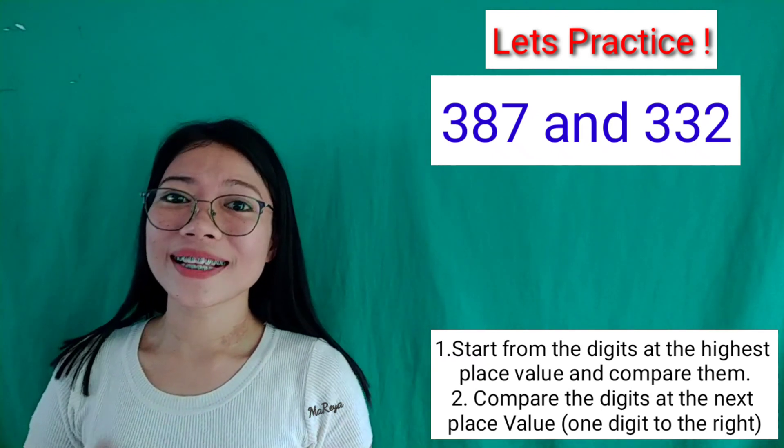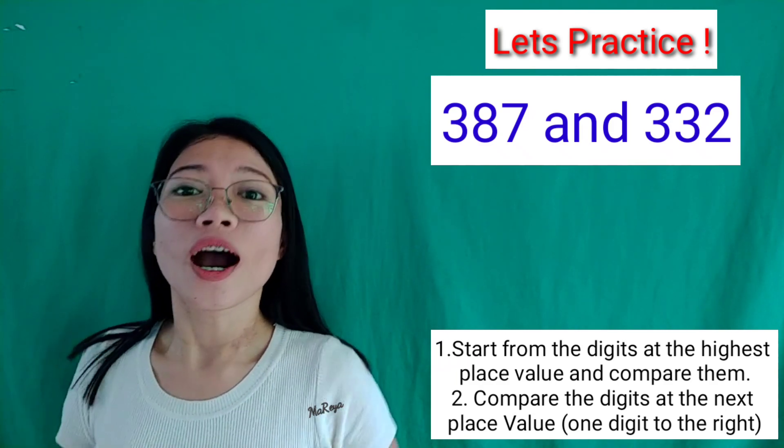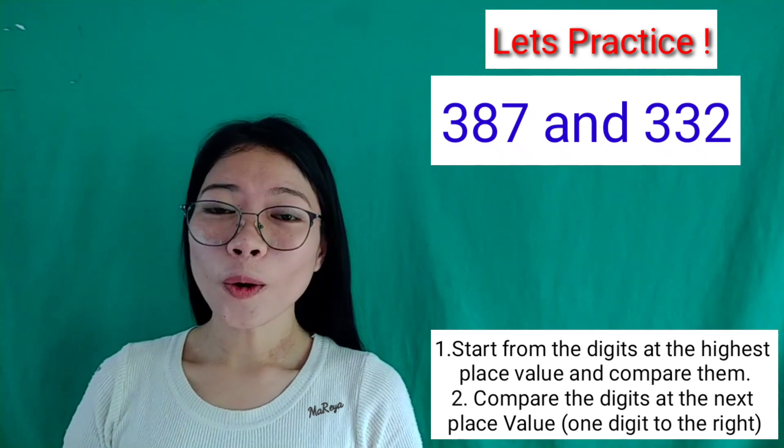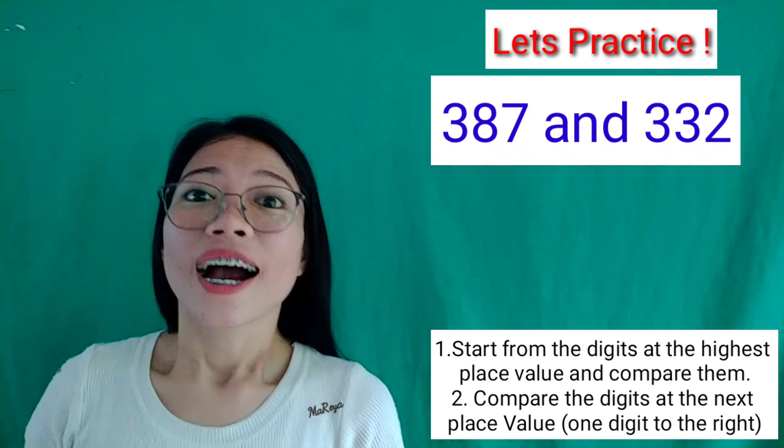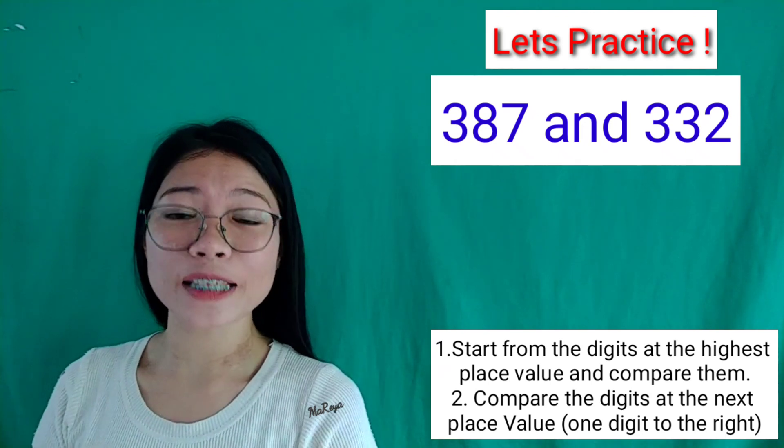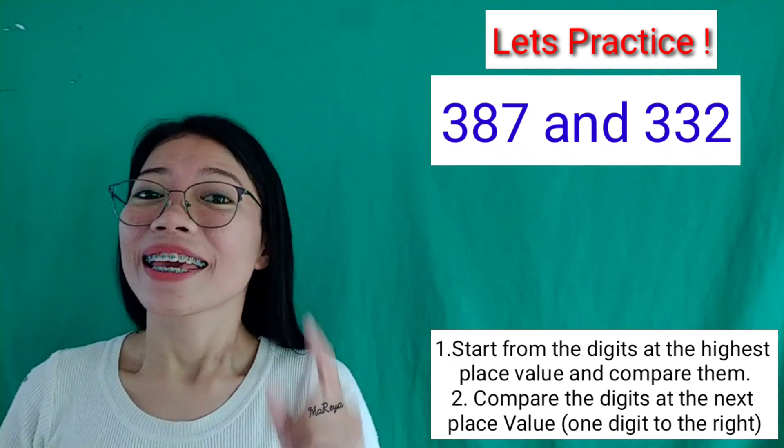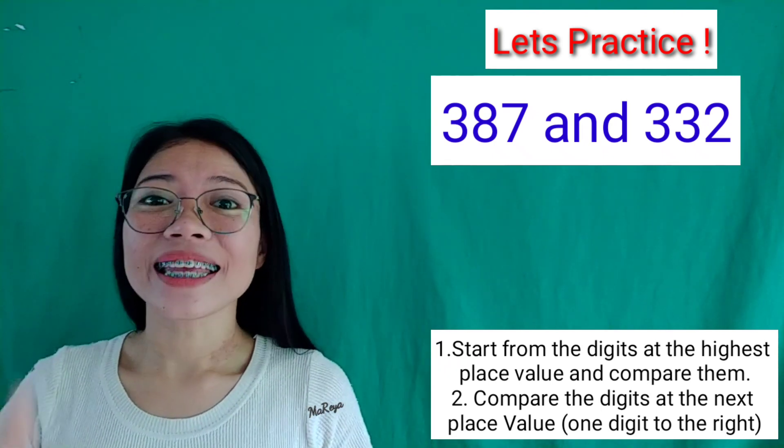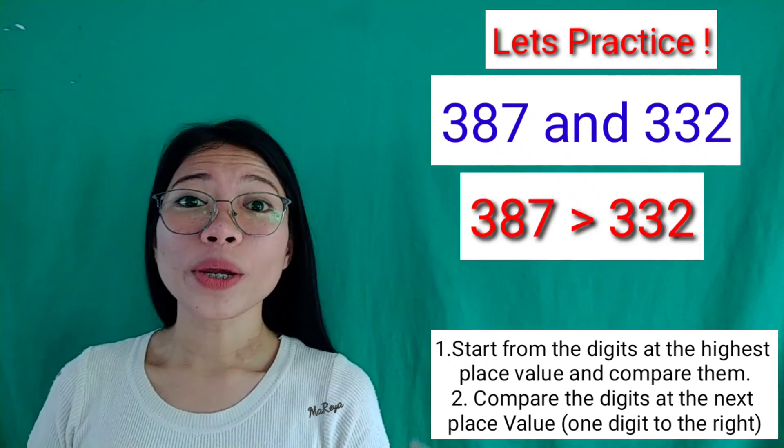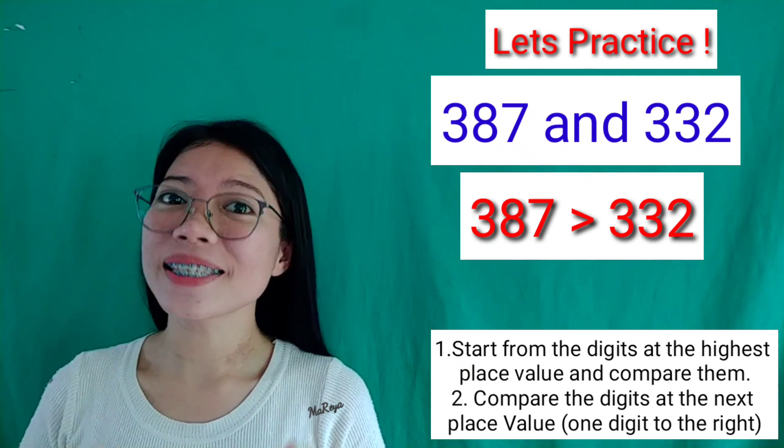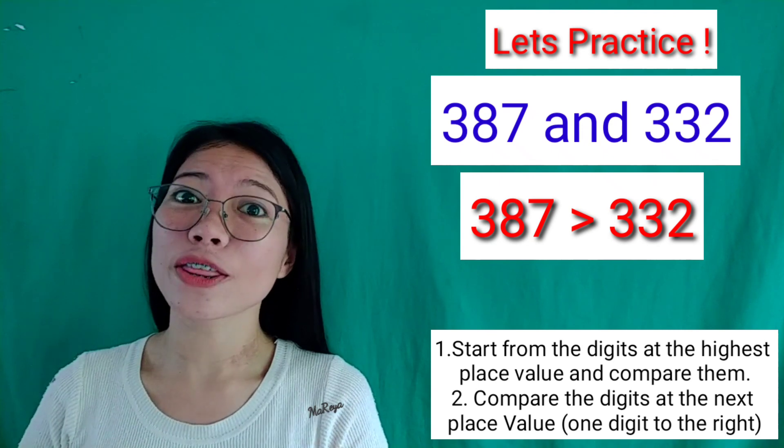Let's compare 387 and 332. As you can see, the digits with the same place value are equal. So, let us compare the digits at the next highest place value. Now, what do you see? Yes, 8 is greater than 3. So, 387 is greater than 332.